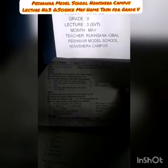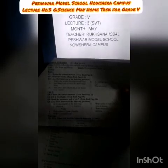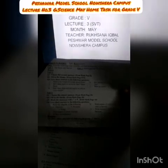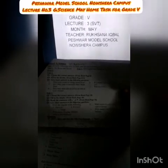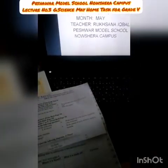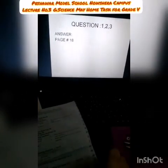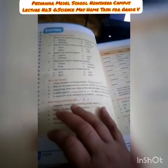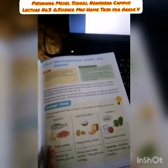Now today we will discuss questions number one, two, and three from unit number two. Question number one in unit two is 'Choose the correct answer,' question number two is 'Fill in the blanks,' and question number three is 'Mark the sentences with tick or cross.' All three questions' answers are on page number eighteen, from chapter number two: Microorganisms, Health and Diseases.